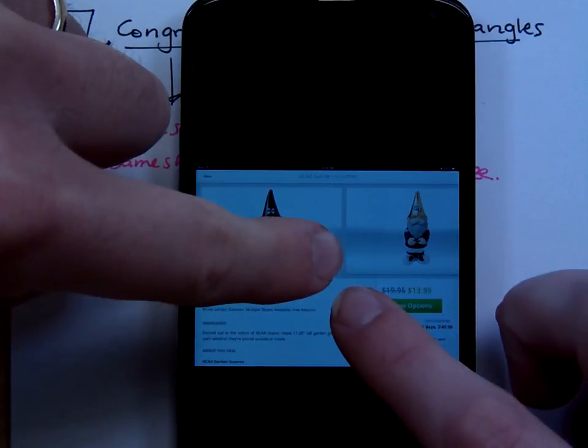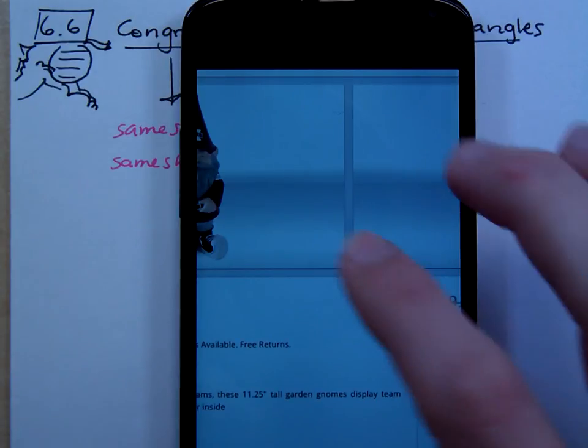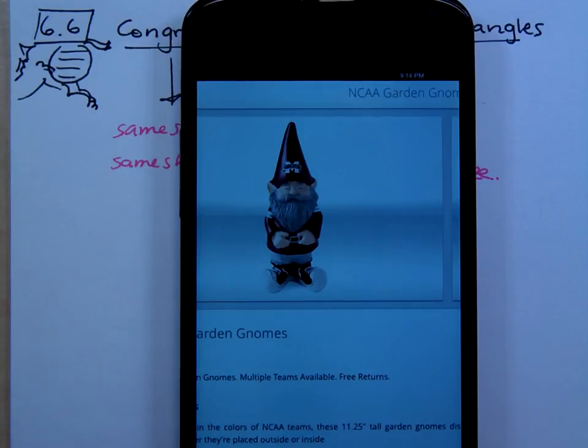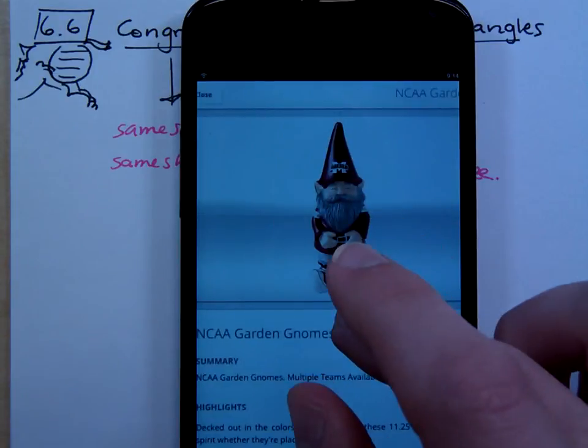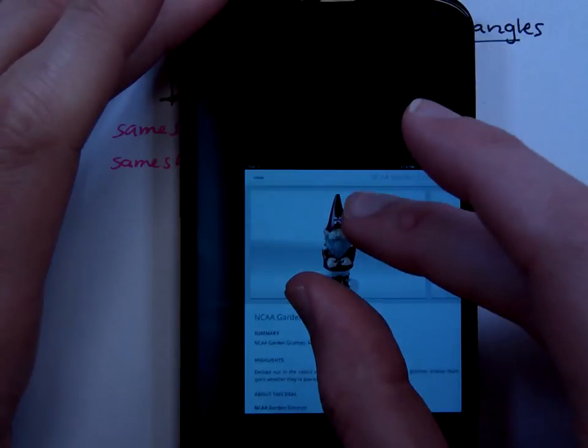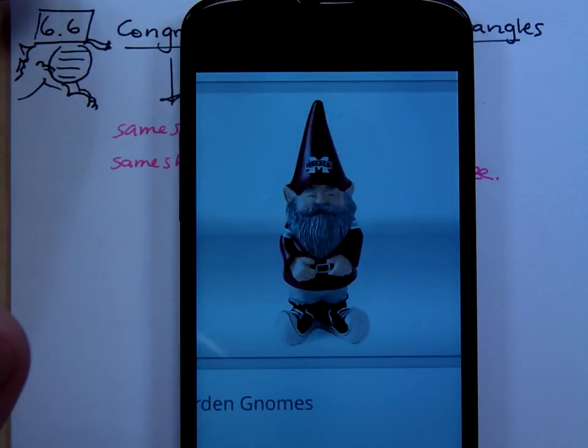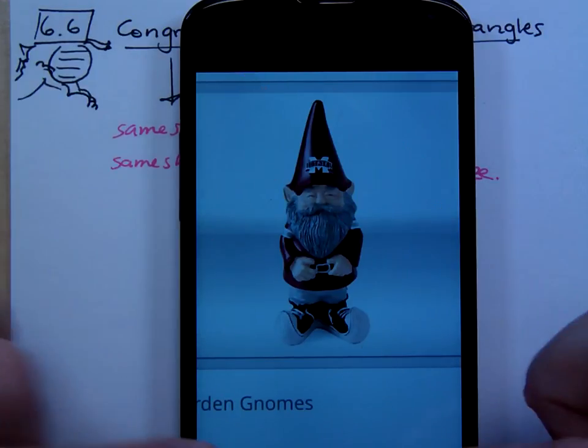But if I were to zoom in like this, did the shape change? The shape is still the same, right? Yes, by the way, that is a Mississippi State Garden Gnome. I did not purchase this. Wanted to. Chose not to. But if I zoom in or out, the shape is still the same, right? The size changes, though, doesn't it? Relative to my screen, the size changed.